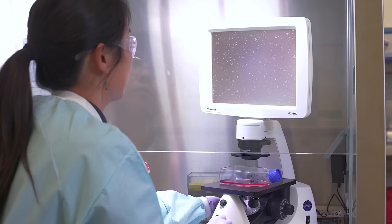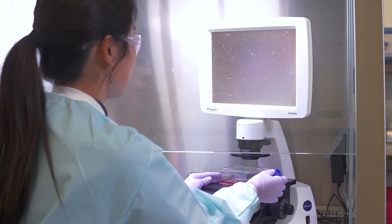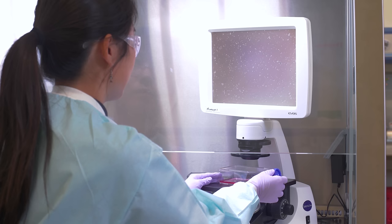Use a microscope to confirm the cells have released from the flask. They will start to appear round as they release from the substrate and will move or slide when the flask is tilted.